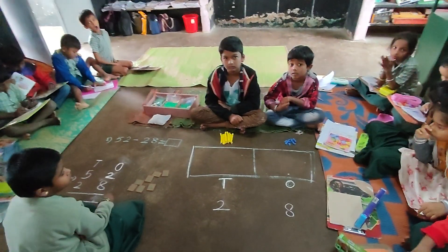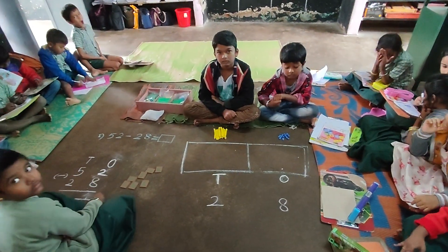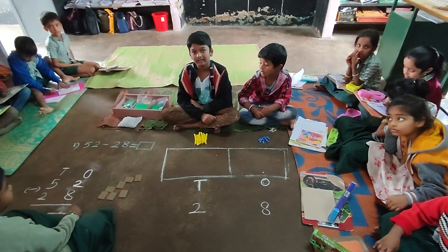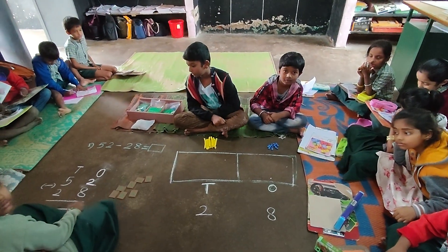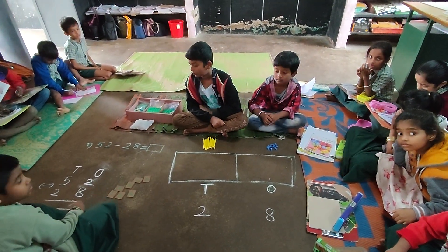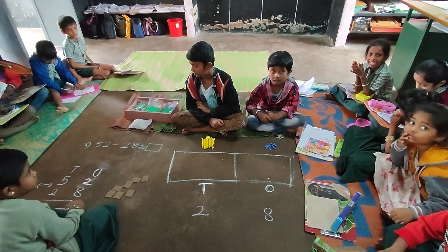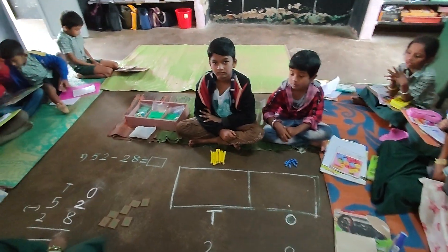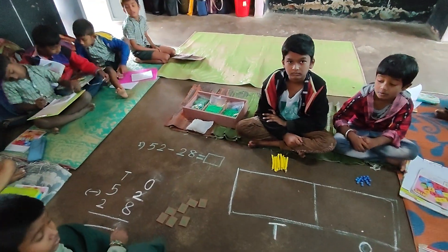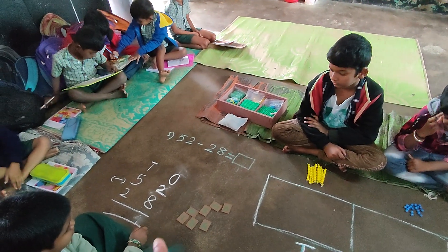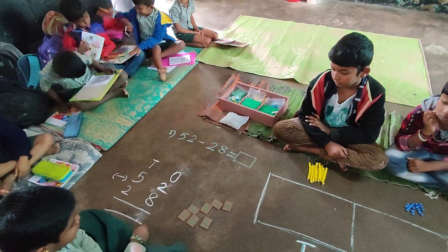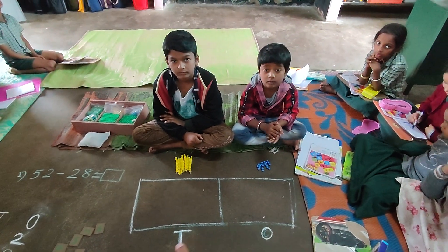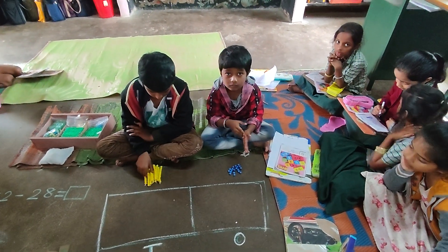That means from 52 you have to take away 28. See the number — 23 or 28? 28, okay. See, she has written very nicely. So from 52 you have to take away 28. You have to arrange 52 in this box.